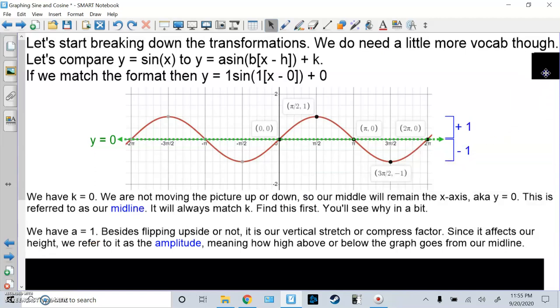Since k is 0, we're not moving the picture up or down. So our middle will remain the x-axis. The x-axis is also known as y equals 0. This is referred to as our midline. It's very important. It will always match k. Find this first, because it will help you do the next part.